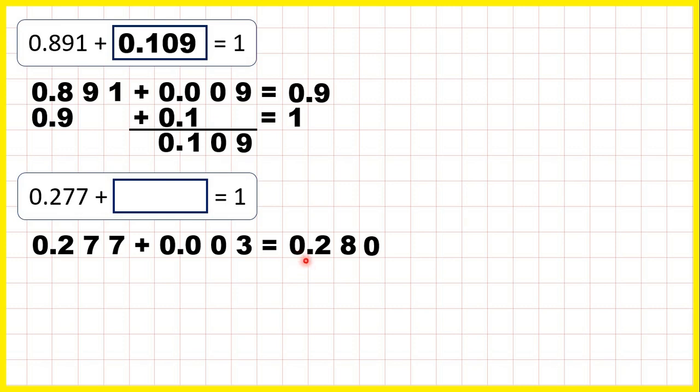But because we have 0.280, we don't need zeros on the end of decimals. But now, from 0.28, we can add 0.02, so two hundredths, to make 0.30, just as 28 plus 2 is 30.